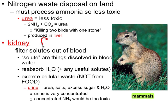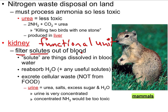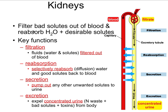The kidney is the main functional organ of the excretory system — it does all the filtering. It filters solutes out of the blood. A solute is anything dissolved in something else, so here we're talking about stuff dissolved in blood. The kidneys reabsorb the good stuff and excrete or get rid of all the bad stuff.